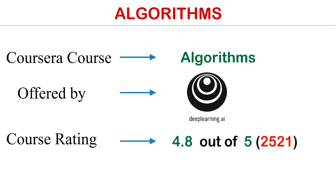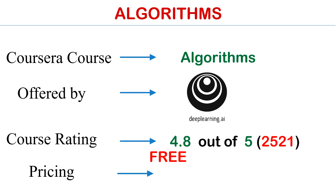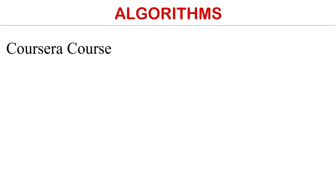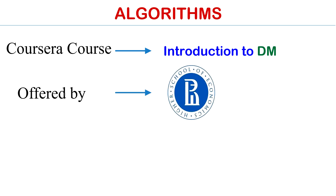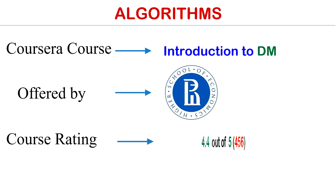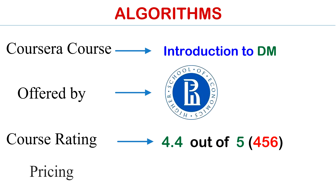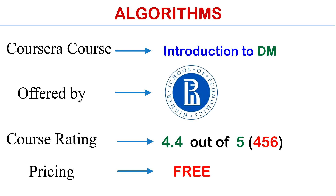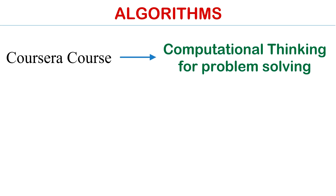Course number two is Algorithms, offered by DeepLearning.AI. The rating of this course is 4.8 out of 5 and the price is also free — link is in the description box. Course number three is Introduction to Discrete Mathematics, offered by National Research University, rated 4.4 out of 5. The price of this course is also free; the link is in the description box.